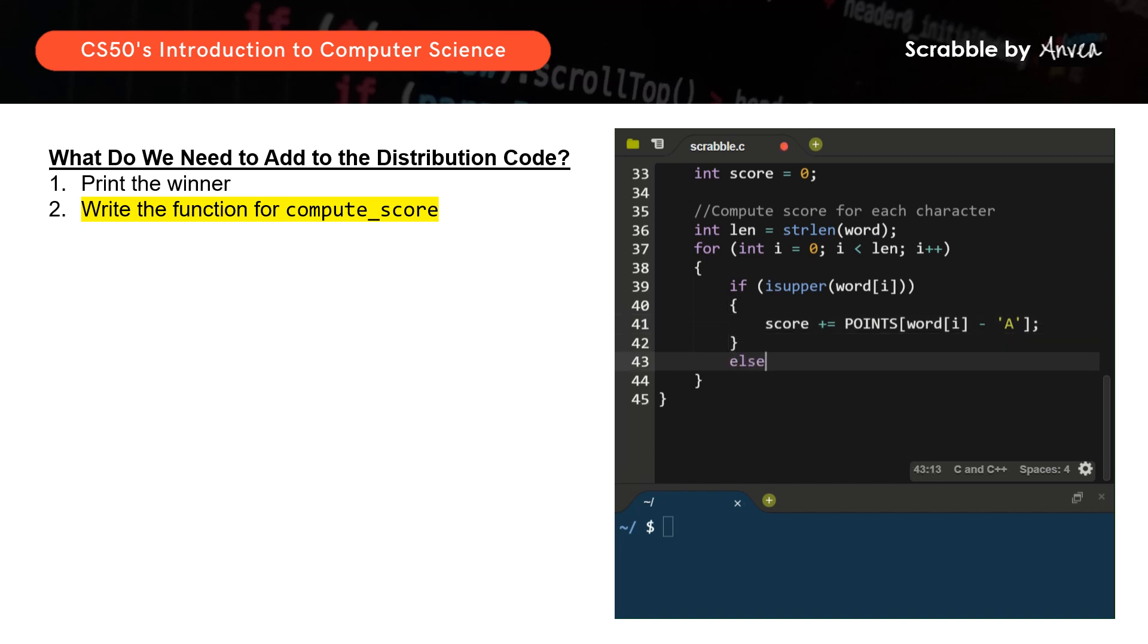So else if, if it's actually a lowercase character, then we will add to the score points, word i minus. Now it will be the lowercase A. Then after that, what we want is that it will return the score. So this is the function that we're looking at.